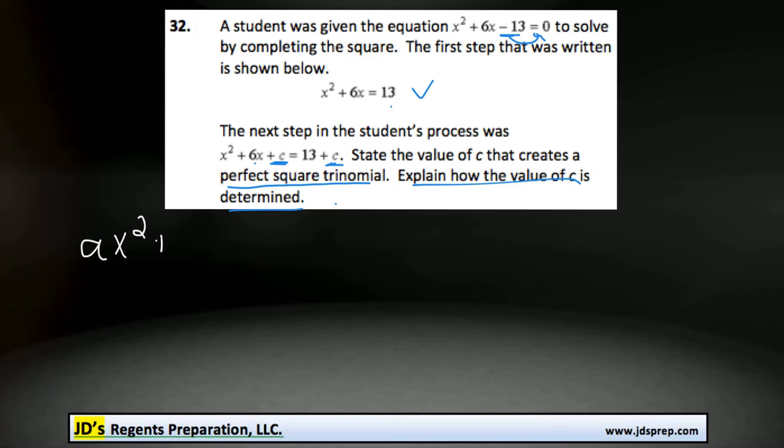to complete the square when we have a polynomial in the form ax squared plus bx plus c, what you need to do is find out your b value, take half of it, and then square that number.